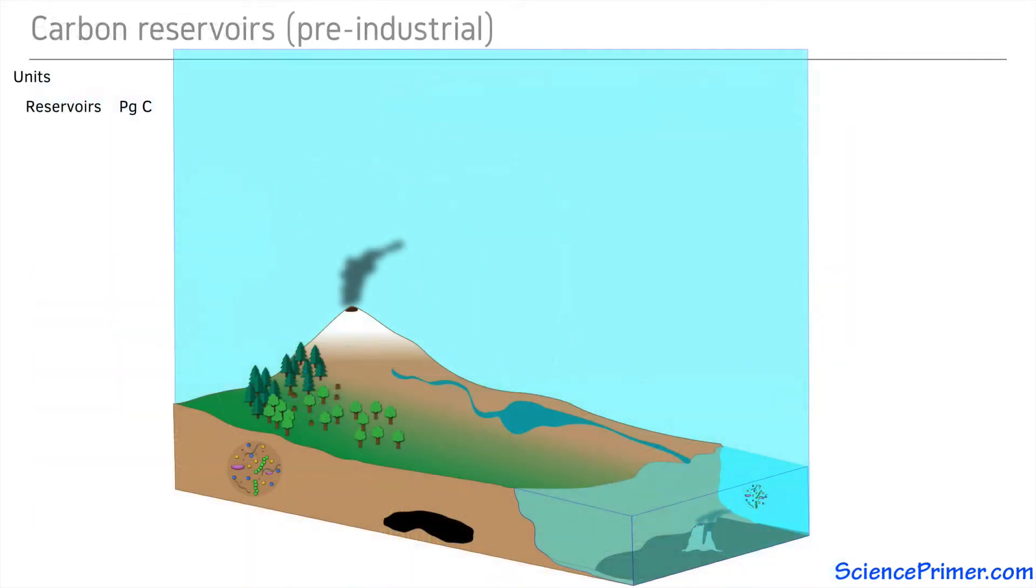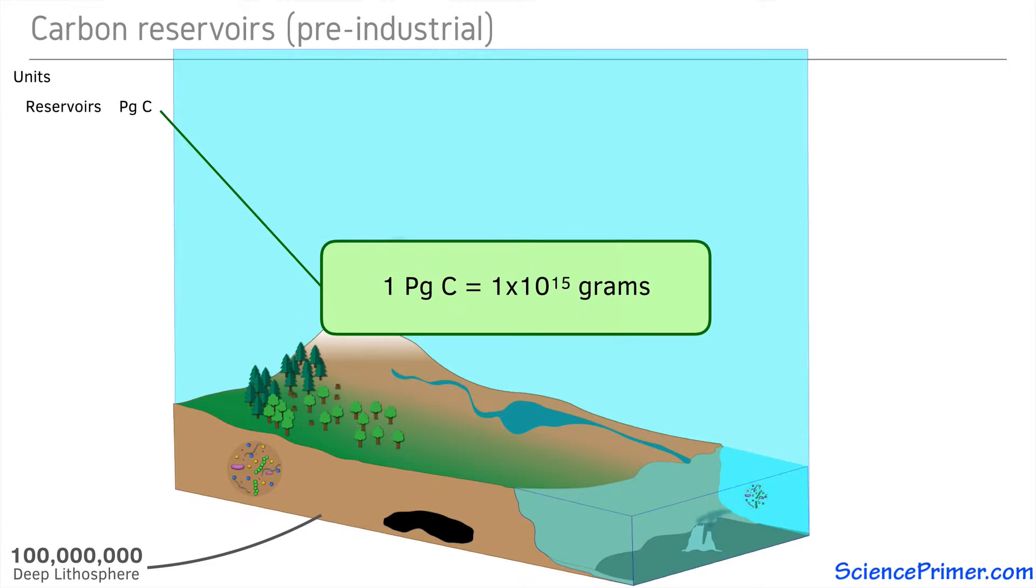The vast majority of the carbon on Earth is in the deep lithosphere. This reservoir contains 100 million petagrams of carbon, where a petagram is 1 times 10 to the 15 grams. Most of this carbon only interacts with other reservoirs over very long geological time periods, but there are other smaller, more active pools within this larger reservoir that do cycle over shorter time periods.